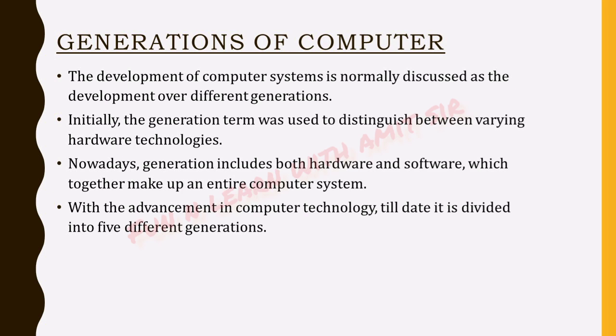You all know that technology is developing day by day. The development in the technology of computer systems is normally discussed as development over different generations. Initially, the generation term was used to distinguish between varying hardware technologies, but nowadays a generation includes both hardware as well as software, which together make up an entire computer system.